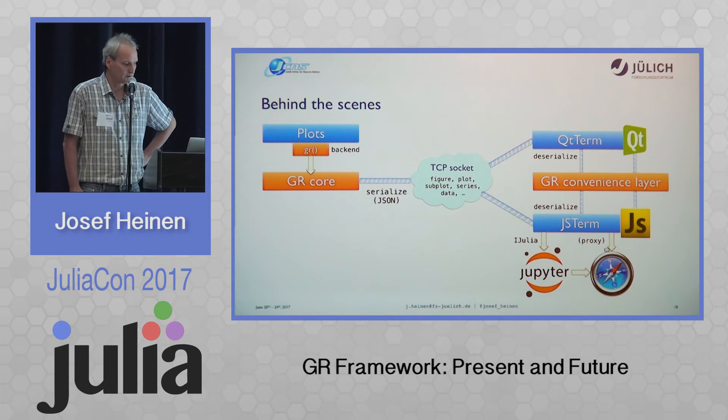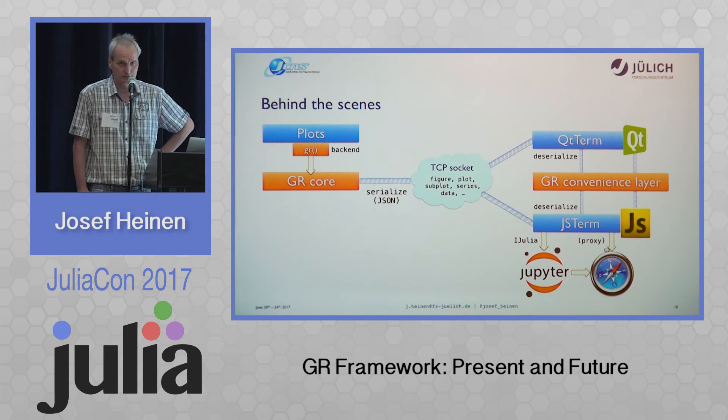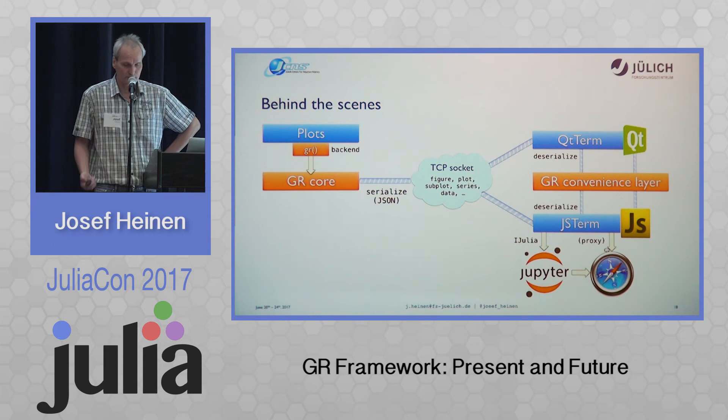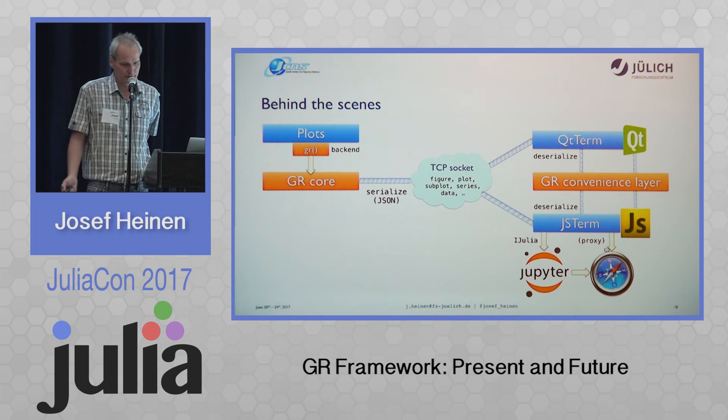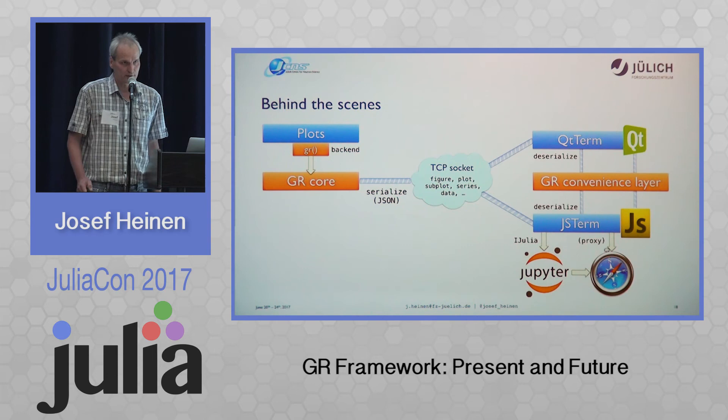What's happening behind the scenes? The GR core will serialize all its graphics output using a JSON protocol. This will then be sent over a TCP socket to a QT terminal or to a JavaScript terminal. The content sent is a series of figure, plot, subplot, and data commands. Both new components will use a convenience layer which makes it easier to maintain the package for different languages and different backends.